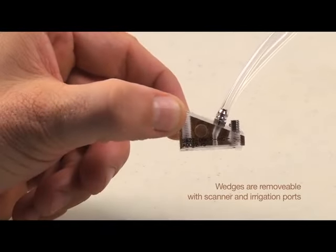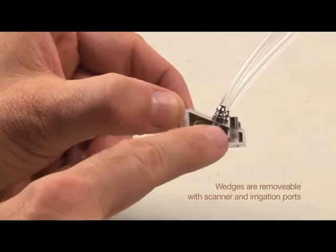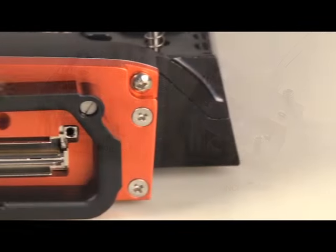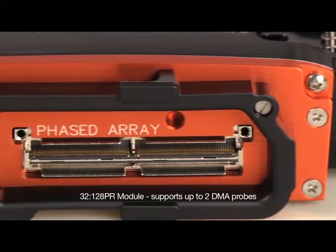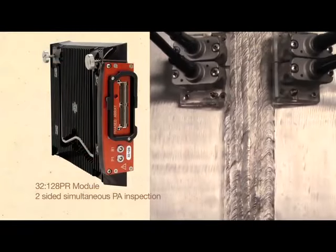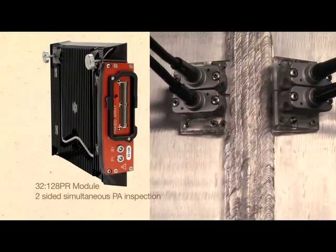DMA probe wedges are removable, come with scanner and irrigation ports, and are designed for either volumetric or shallow surface inspection similar to conventional UT-TRL creeping wave probes. The 32128 PR module supports up to two DMA probes for two-sided simultaneous phased array inspection.